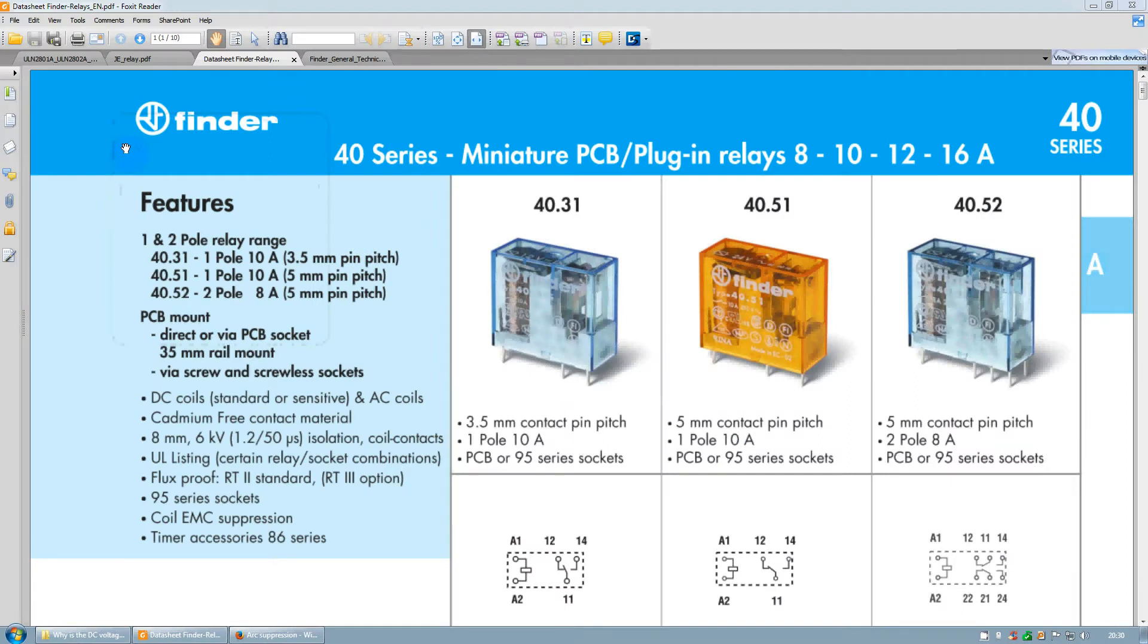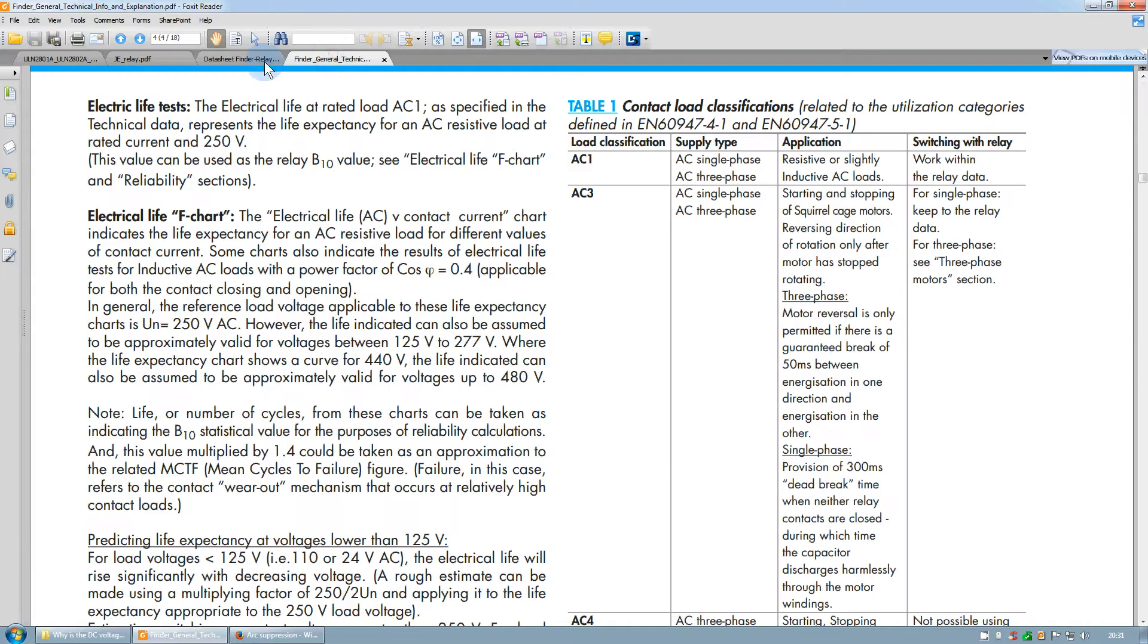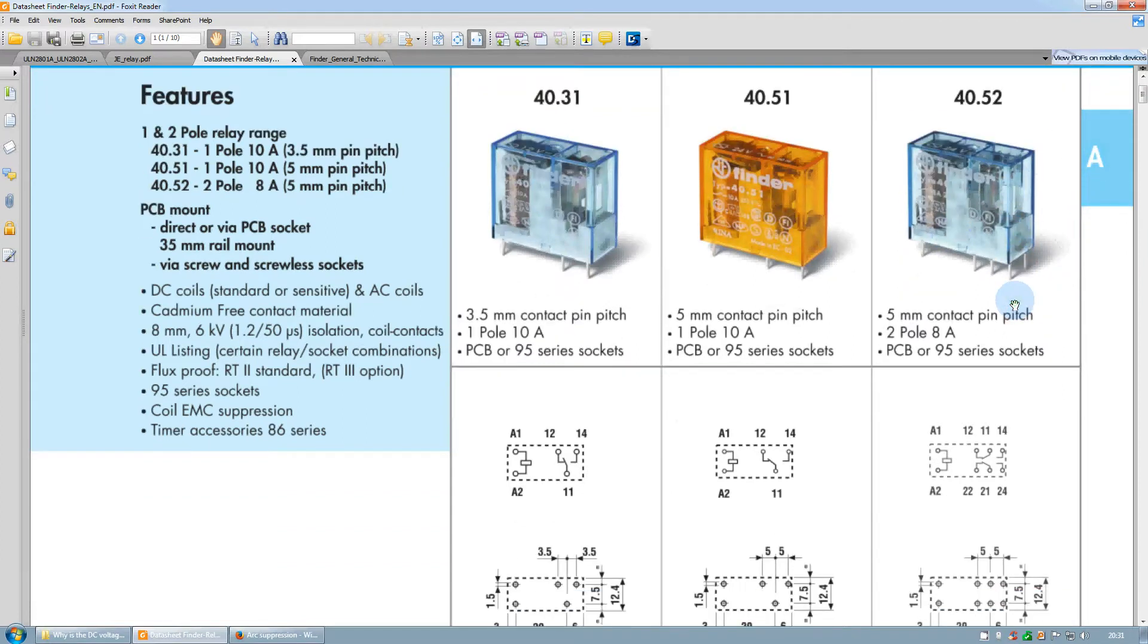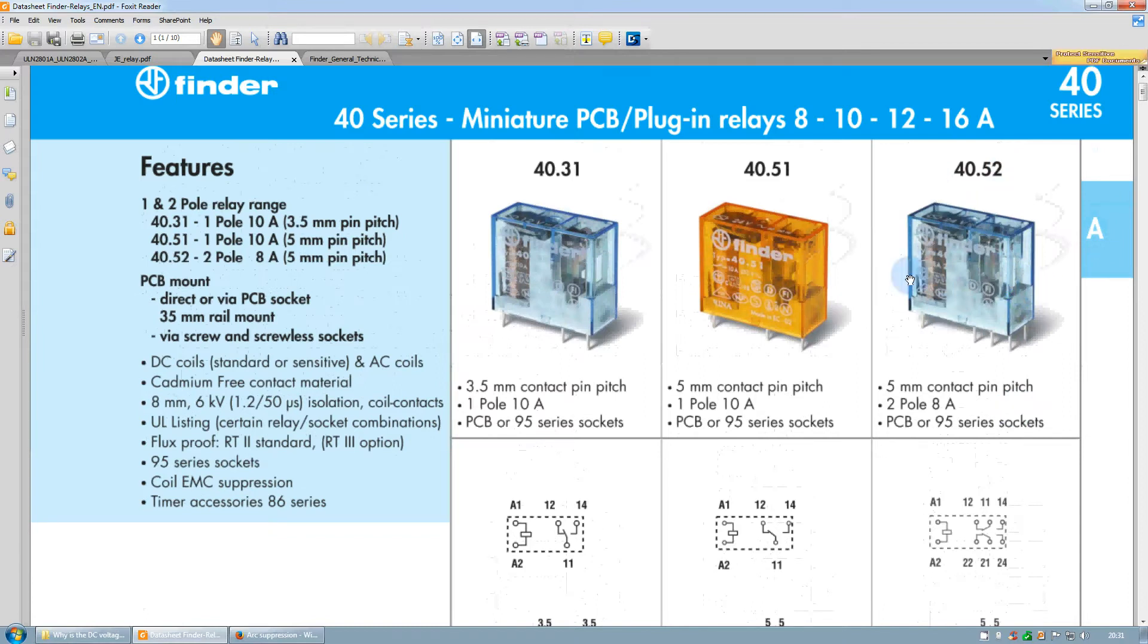Let's take a look at the datasheet of the Finder relay which we use in our UniRail relay interface. You can download the datasheet and further technical explanations from our homepage where you find the UniRail documentation.